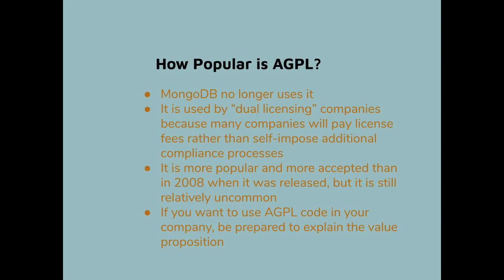If you want to champion the use of AGPL code in your organization, you will have to show that the value proposition is right — that the benefit of using the code outweighs the risk and cost. One challenge is that the so-called killer app of AGPL was MongoDB, which as of 2018 no longer uses this license. Today, most well-known software under this license is developed by dual-licensing companies that sell exceptions, and given the additional cost and risk, many companies choose the commercial licensing route instead. While AGPL has grown in popularity since it was released, it has never been in very common use.